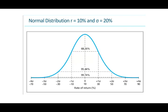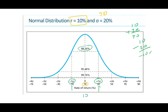Here we're working with a normal distribution bell curve where the expected return is 10% and the standard deviation is 20%. Within one standard deviation — plus one and minus one — we have 10 plus 20 = 30% on the upper end, and 10 minus 20 = negative 10% on the lower end. So 68% of the return falls within that range of negative 10% to 30%.